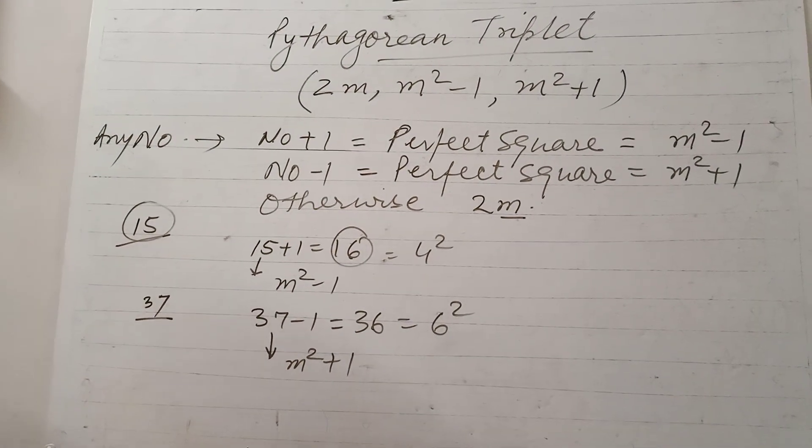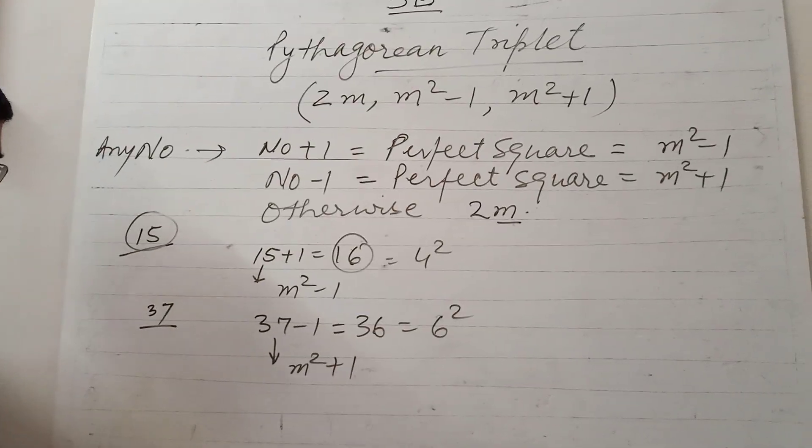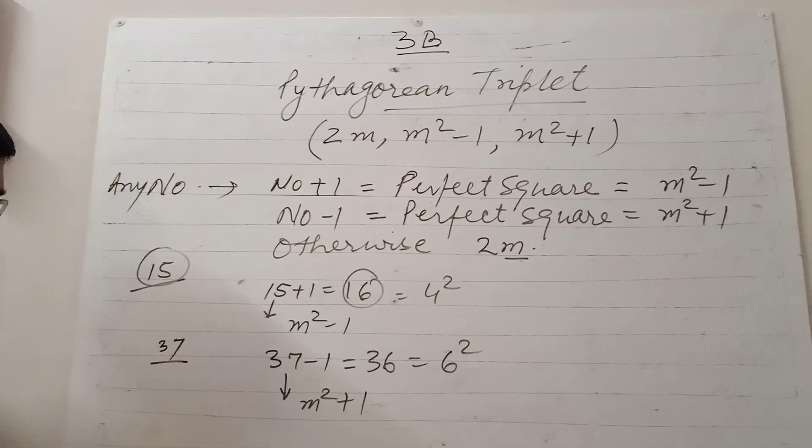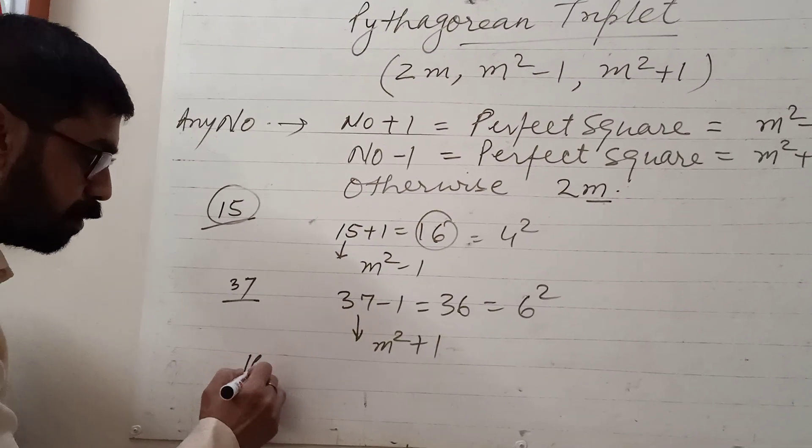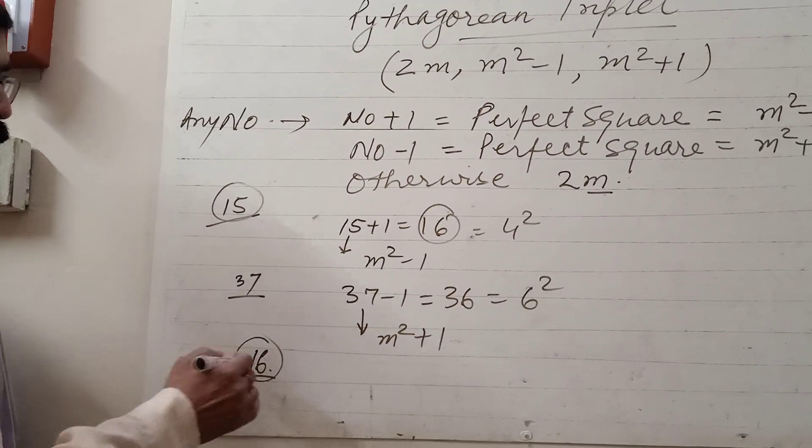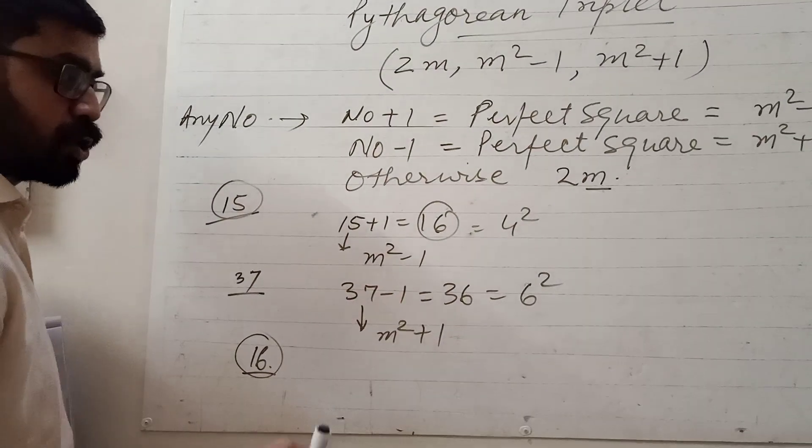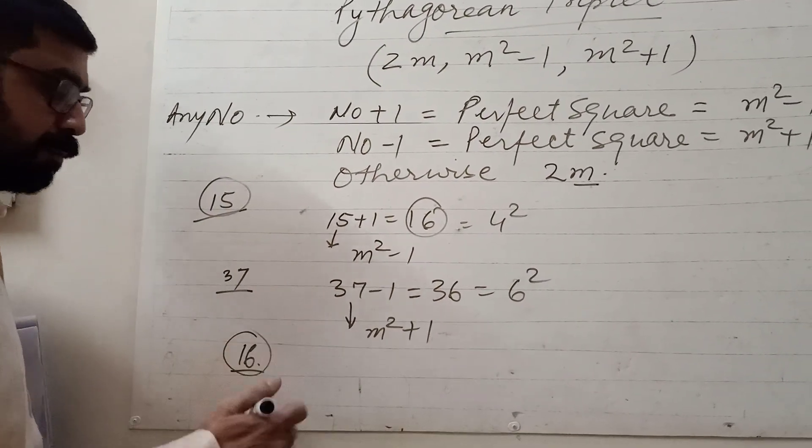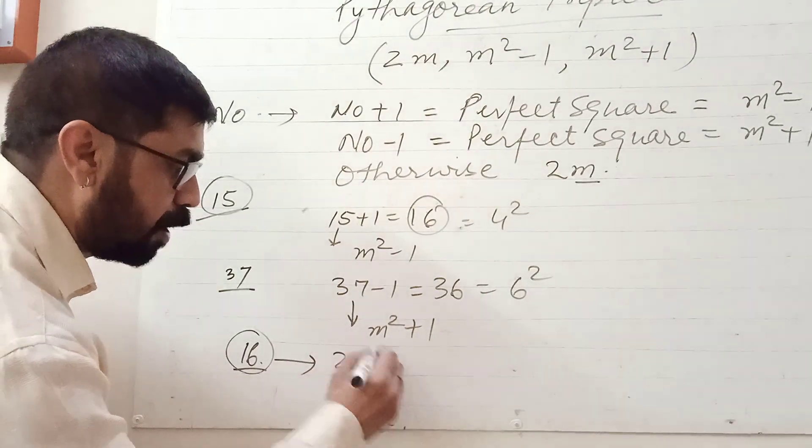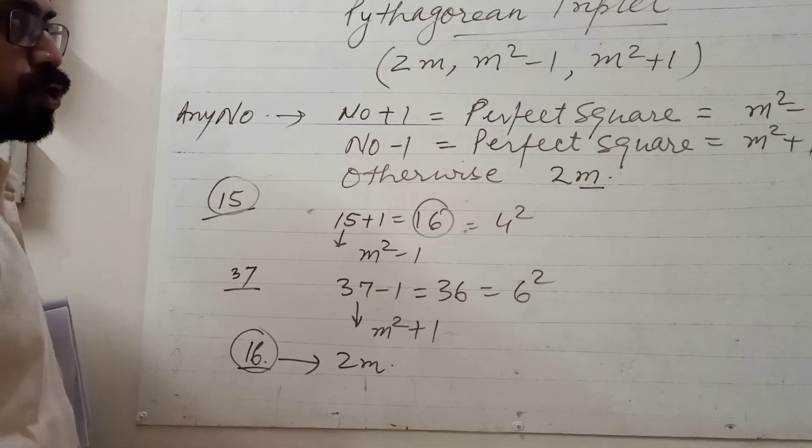And if the condition is not satisfied, suppose I have given you 16. This is already a perfect square. If you add plus 1, 17 is not a perfect square. Minus 1, 15 is not a perfect square. So this 16 will be the value of 2m. We will see it by some questions.